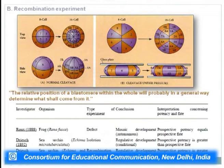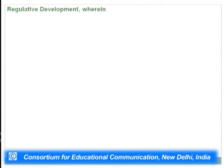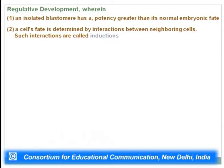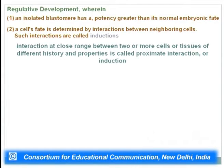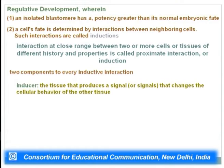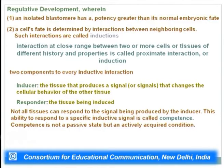In Driesch's recombination experiment in sea urchin, prospective potency is again greater than prospective fate. Regulative development is an important concept wherein an isolated blastomere has a potency greater than its normal embryonic fate, and a cell's fate is determined by interactions between neighboring cells — such interactions are called inductions. The interaction at close range between two or more cells or tissues of different history and properties is called a proximate interaction or induction.